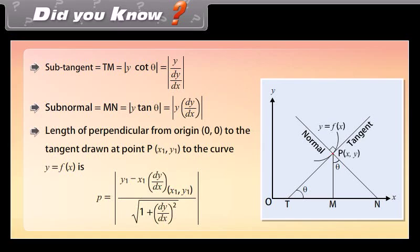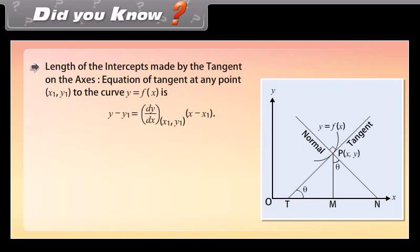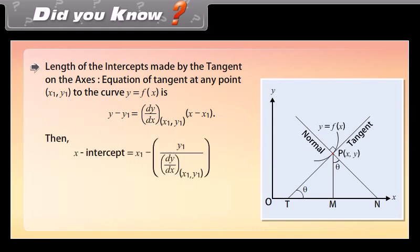Length of perpendicular from origin (0, 0) to the tangent drawn at point P(x₁, y₁) to the curve y = f(x) is P = |y₁ − x₁ · (dy/dx at x₁,y₁)| / √(1 + (dy/dx)²). The x-intercept of the tangent is x₁ − y₁ / (dy/dx at x₁,y₁), and the y-intercept is y₁ − x₁ · (dy/dx at x₁,y₁).